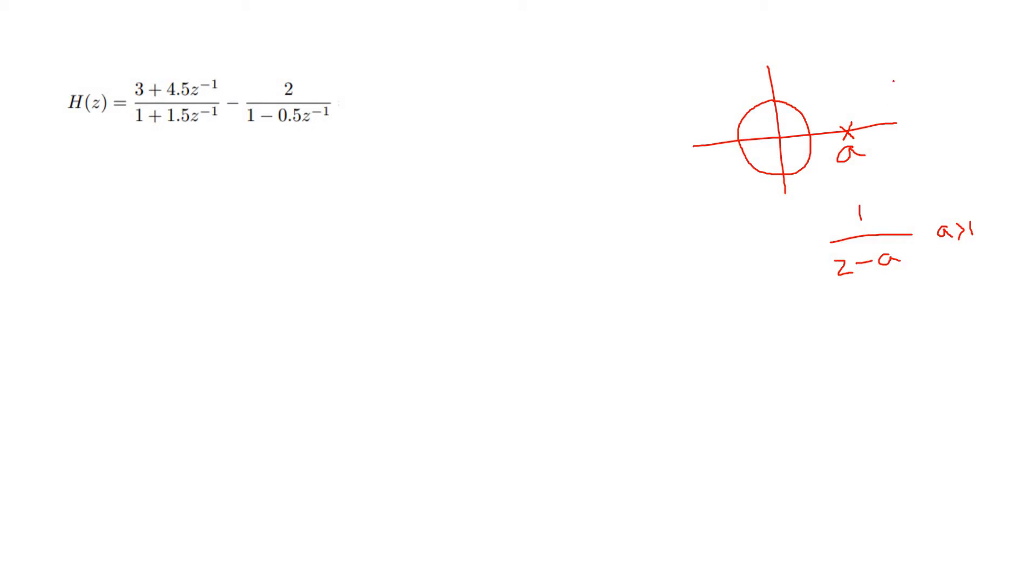Now you know what pole does. Pole always tries to increase the magnitude response, and zero affects in the reverse way. Zero always tries to decrease the magnitude response. So the effect of pole can be nullified by a zero at the same position.